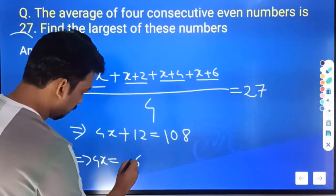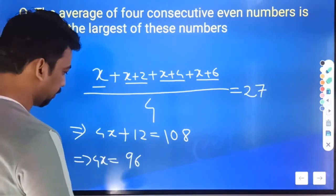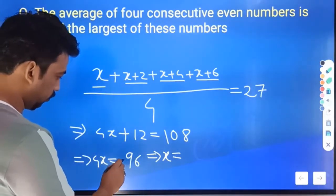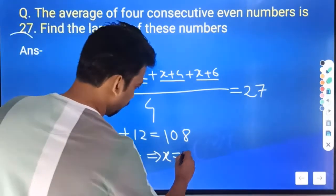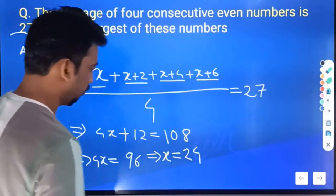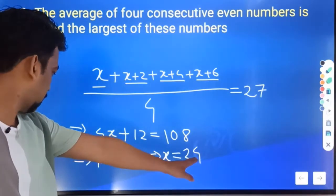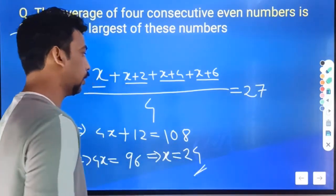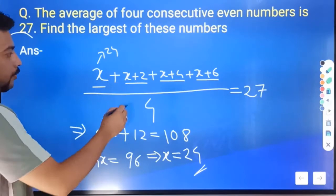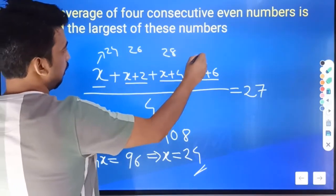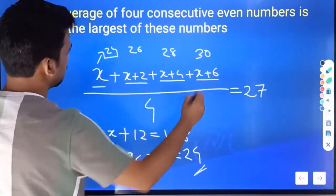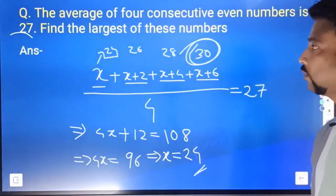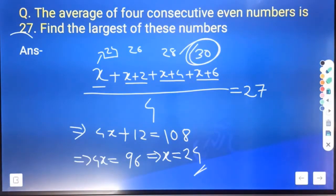x minus gives 690, then 96. x is equal to 24. So the four numbers are 24, 26, 28, 30. The largest number is 24 plus 6, which is 30.